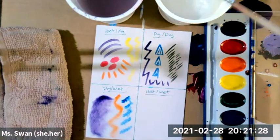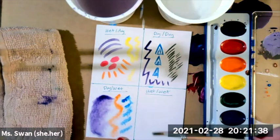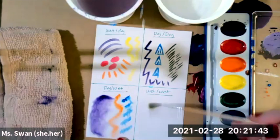My final technique is wet on wet. I have a wet brush, wet paper, and this is really good for gradients, meaning that my color is changing, or washes to cover whole backgrounds.